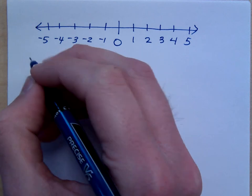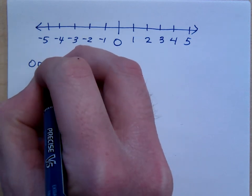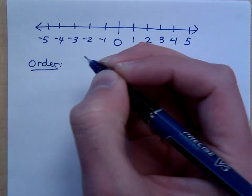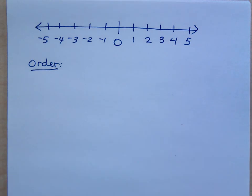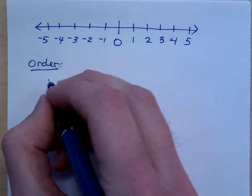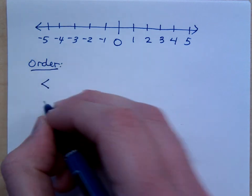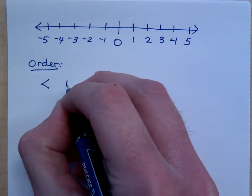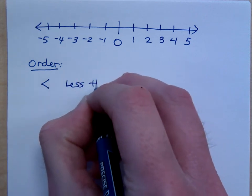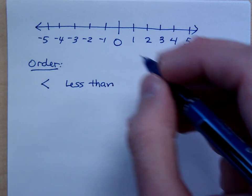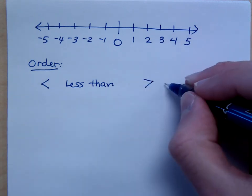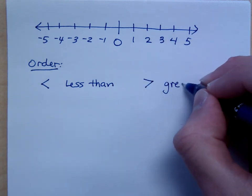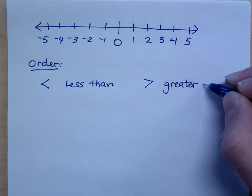But there's something here about these integers and real numbers in general that we have, and it's called order, right? When we talk about order, we talk about putting things in a particular order, a particular set, a particular arrangement. And we can do that using these symbols. What does this symbol mean? That is the symbol for less than. And what about this guy? Greater than.